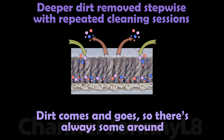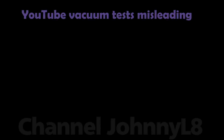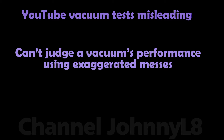Understanding the statistical nature of particle removal and the filter-like nature of carpets has some important consequences for how you should view and interpret various YouTube videos showing home user tests. While these tests may be well-meaning, they can often be quite contrived and exaggerated, and thus rarely represent how well a vacuum would clean a home under real-world conditions. This is a natural consequence of the statistical nature of particle removal from this kind of system.